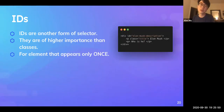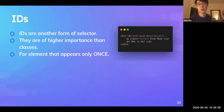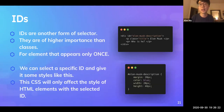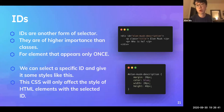There is also a thing called ID. ID is just another form of selector and actually has higher importance than classes. IDs are usually for elements that appear only once. For example, if there's an introduction for different team members and Elon Musk needs special treatment for his description box, we can create an ID called 'elon-musk-description' and select it by adding a hashtag before the name. IDs are similar to classes but normally applied to elements that appear only once or are very specific.